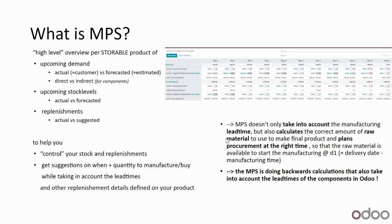The MPS helps you control stock and replenishment by making suggestions on when and what quantity to manufacture or buy, taking into account lead times and other replenishment details defined on your product. If your final product needs to be manufactured, the MPS doesn't only consider manufacturing data but also calculates the correct amount of raw material needed and at what time to procure it — ensuring raw materials are available when manufacturing needs to start. The MPS performs all these backward calculations while accounting for all component lead times.